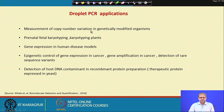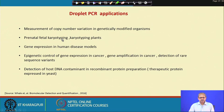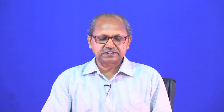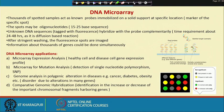Applications of droplet PCR (digital PCR) include: measurement of copy number variation in genetically modified organisms, prenatal fetal karyotyping, gene expression in human disease models, epigenetic control of gene expression in cancer, gene amplification in cancer, detection of rare sequence variants, and detection of host DNA contaminants in recombinant protein preparations — for example, detecting picogram or femtogram levels of DNA in therapeutic proteins expressed in E. coli or yeast that cannot be detected by normal methods.